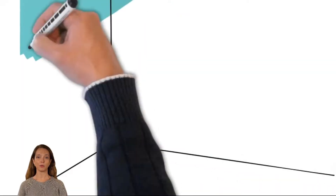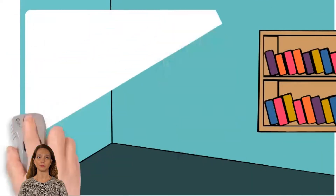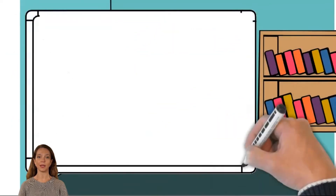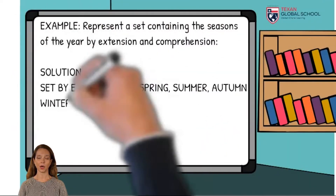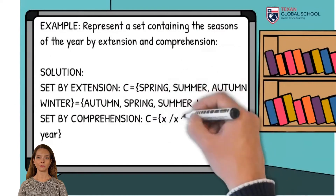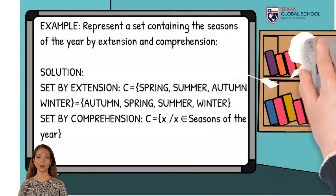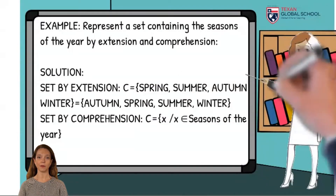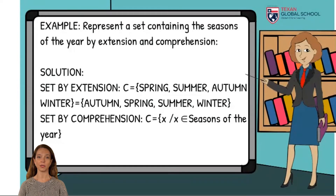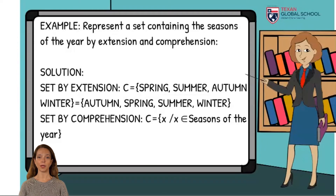Let's move on to one last example: Express the set that represents the seasons of the year by extension and comprehension. As the set by extension contains all the elements, therefore, the set of the seasons of the year C includes the elements spring, summer, autumn, and winter.